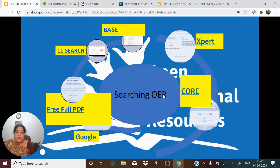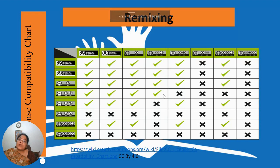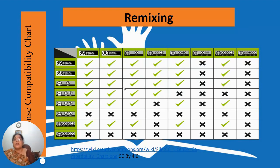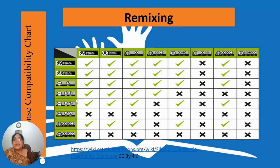Once you've found an OER, you can use it as it is. But if you want to remix two resources, you have to check their compatibility using the CC License Compatibility Chart. For example, CC Public Domain can mix with any license, but it cannot be remixed with ND (Non-Derivative) or CC NC BY ND. CC BY can be remixed with any license except CC ND and CC NC.